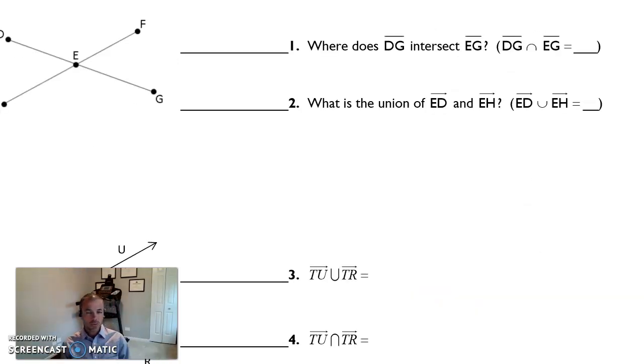All right, so for numbers one and two on this side, I'm going to do them with you. Not because I don't think you can do them, but more because I want to talk a little bit about the proper way to write everything here. So when we talk here, it says, where does segment DG intersect segment EG? So you've got a segment bar. It's important to know that that's a segment because it doesn't have any arrows on the end of the bar above it.